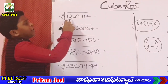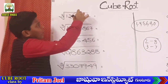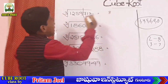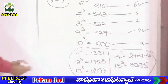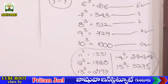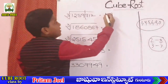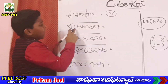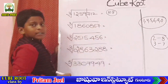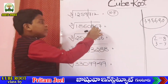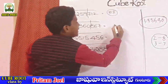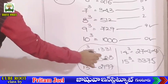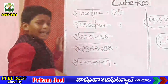Cube root of 1259712: remove last 3 digits. The unit place is 2, so the answer unit place is 8. Remaining is bigger than 1000, means 10 cube. Cube root cancels, so 10. This answer is 108. Next, cube root of 1860867: remove last 3 digits. The unit place is 7, so the answer unit place is 3. Remaining 1860 is bigger than 1728, means 12 cube. Cube root cancels, so 12. This answer is 123.